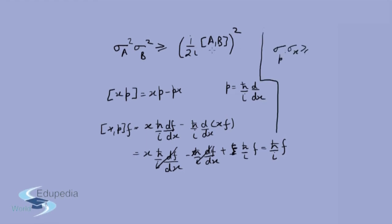This means when you calculate the standard deviation, sigma p times sigma x will be greater than or equal to (1/2i) times (h/i), which gives greater than or equal to h/2, or h-bar/2, which is h by 4 pi. So we see that the uncertainty principle is not necessarily an axiom of quantum mechanics — it is a rigorously mathematically derived result, arising from the fact that the position and momentum operators do not commute, which means they do not simultaneously have a set of eigenstates.